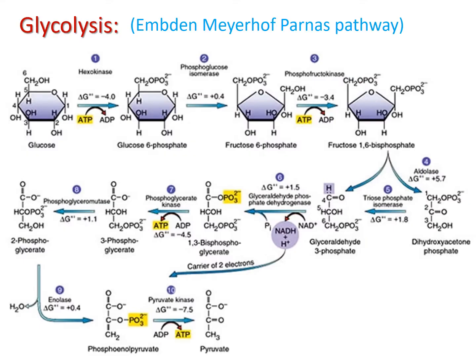Glycolysis is also called the Meyerhof-Parnas pathway. It is very important to remember this name because in exams they might ask you about the steps involved in the Meyerhof-Parnas pathway rather than asking about glycolysis directly. Now we will look at the 10 steps involved in the conversion of glucose to pyruvate.